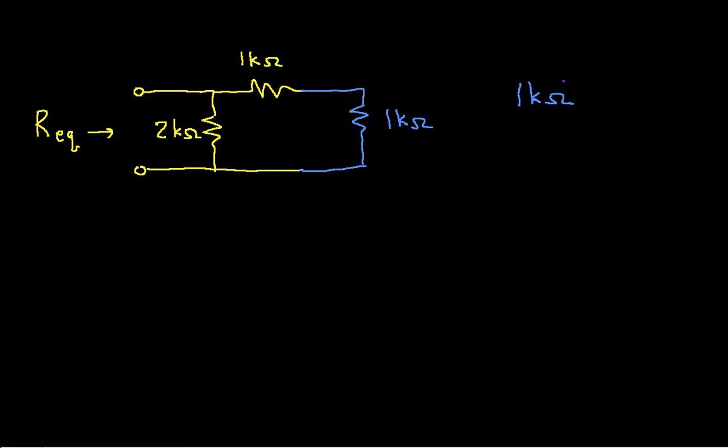So we'll chop off the two guys and replace them by 1k ohm. Okay, I look again to see what I can combine and I find again that I have two 1k ohm resistors in series.